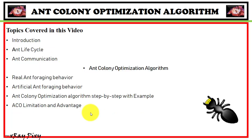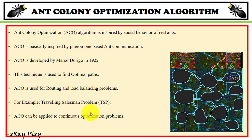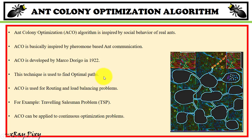Ant Colony Optimization is a meta-heuristic algorithm inspired by the social behavior of real ants, specifically by pheromone-based ant communication. This algorithm was developed in 1992 and is a popular optimization technique used to find the optimal path. It is also used for routing and load balancing problems, and a well-known application is solving the Traveling Salesman Problem.